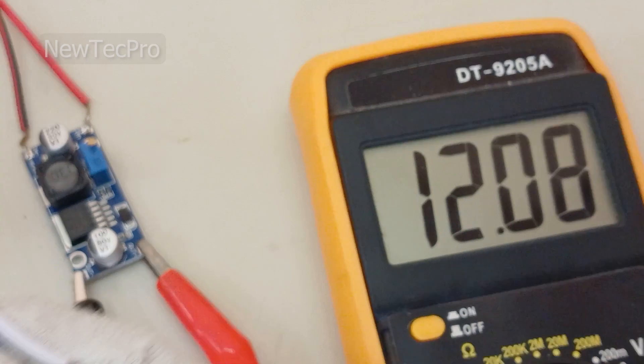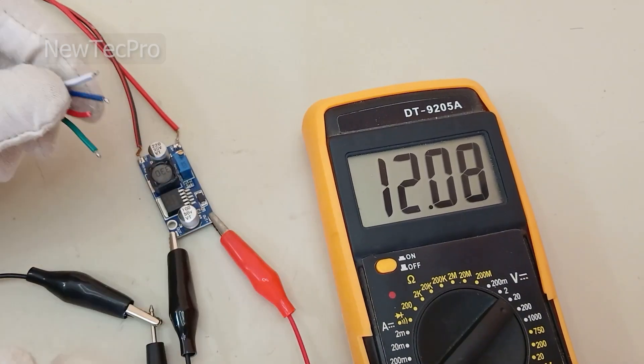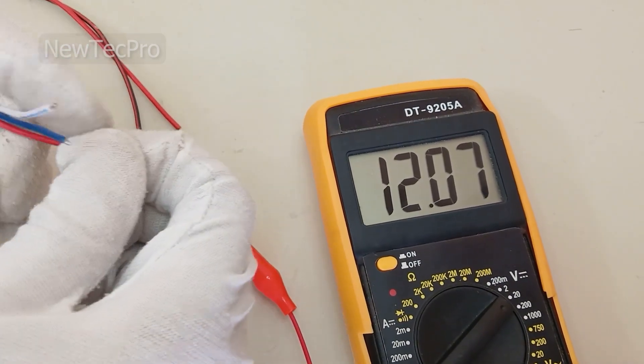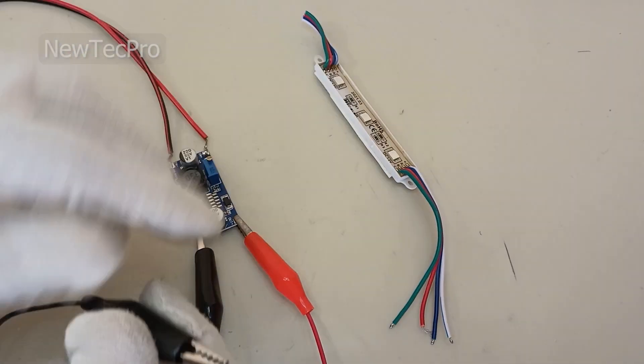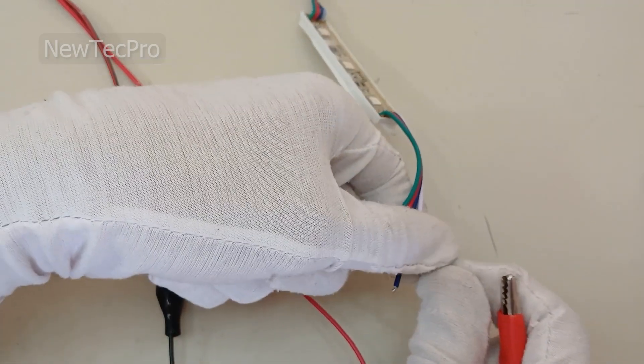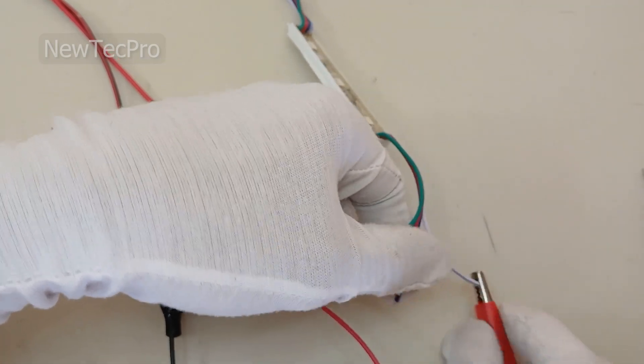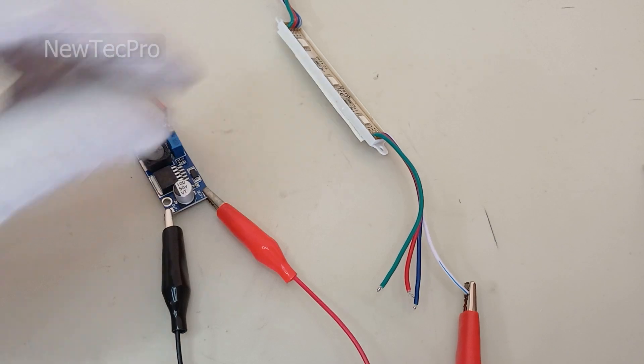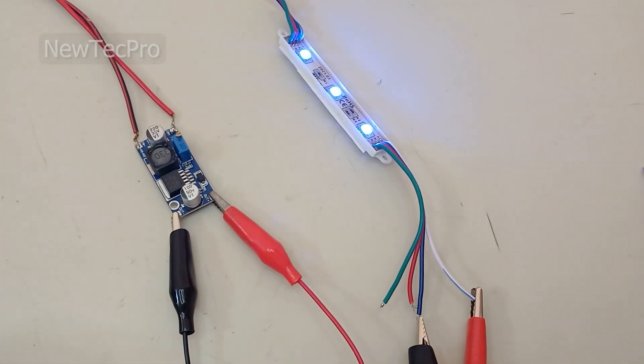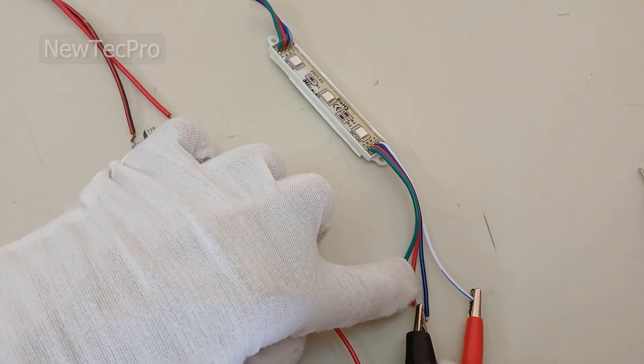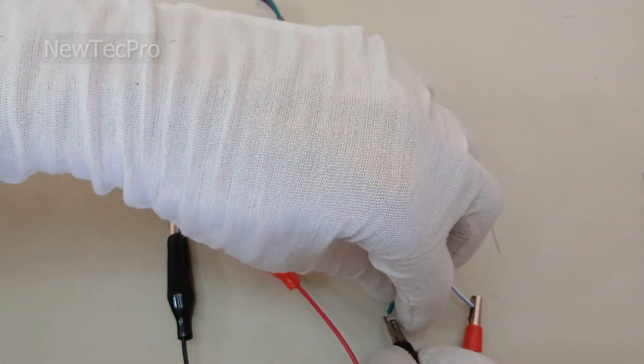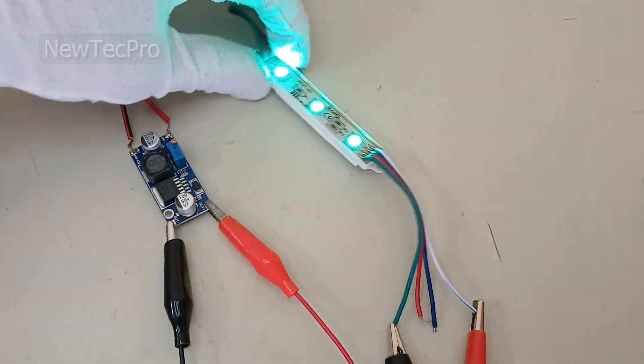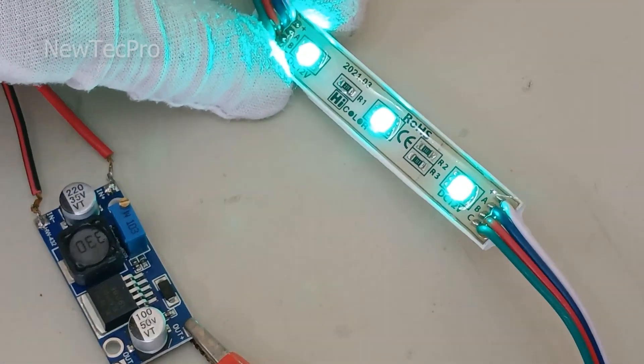...with the 6-volt power supply. Okay, now trying to turn on the 12-volt LED. As you can see, I turned on the 12-volt LED with the 6-volt adapter.